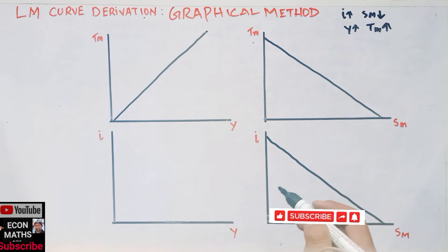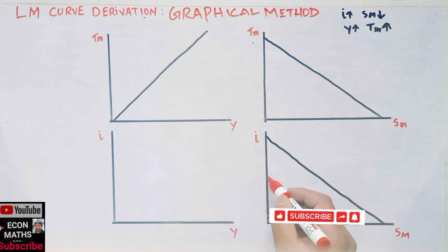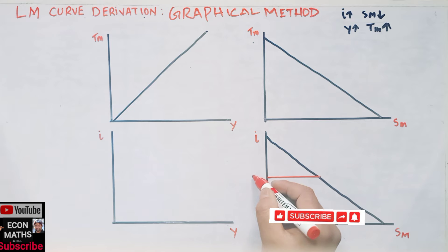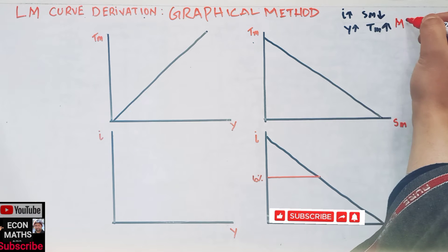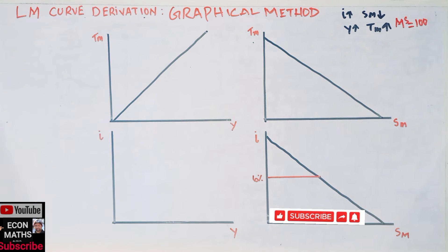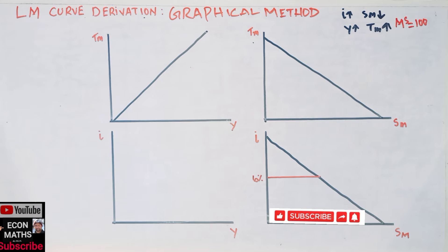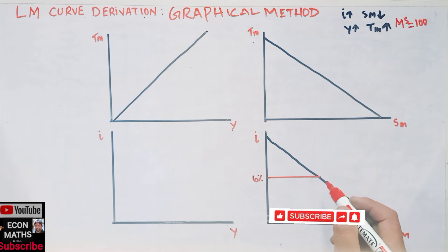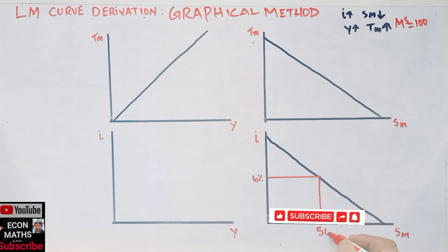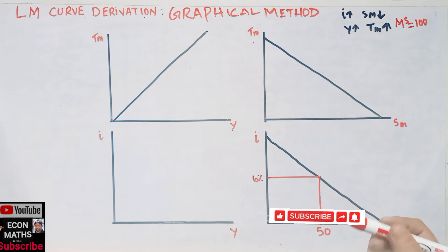For the sake of simplicity, let's say the rate of interest is 6%. We also assume total money supply is 100 million dollars, fixed by central authorities. On a 6% rate of interest, the speculative demand for money is 50.